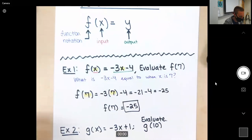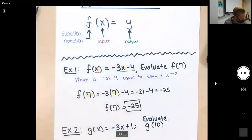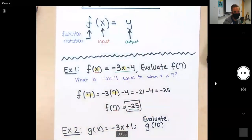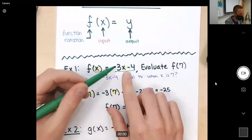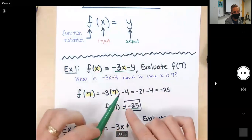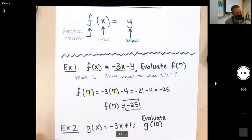And relating this back to the beginning, this is our input, and this right here is our output. That's it. That's all this is. You are just plugging in the number for x, and then you are figuring out what it's equal to. So let's do another example.